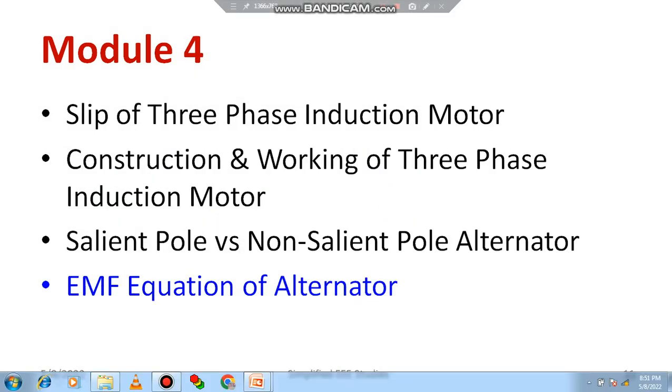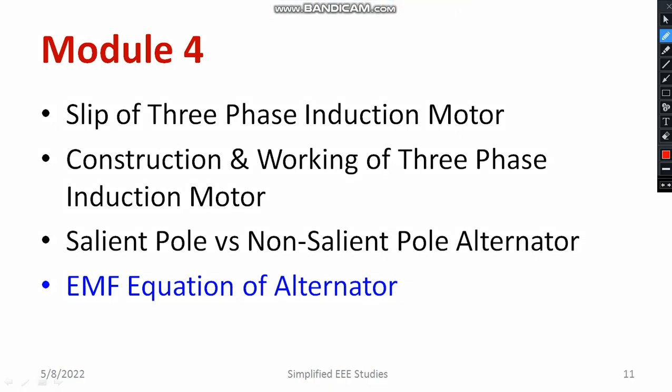Regarding module 4, the following topics are most important: the slip of a three-phase induction motor — know the definition and the equation so you can solve numerical examples. Study the construction and working of the three-phase induction motor, including squirrel cage and slip ring types. For the AC generator, compare salient pole type and non-salient pole type alternator, as these questions can definitely be expected. Also study the EMF equation of the alternator.